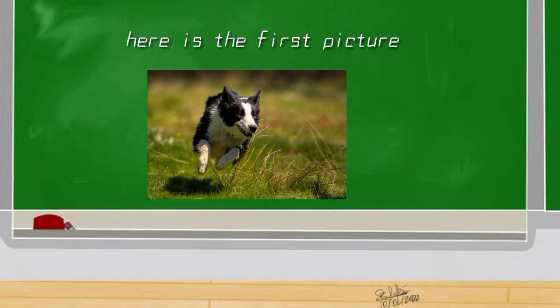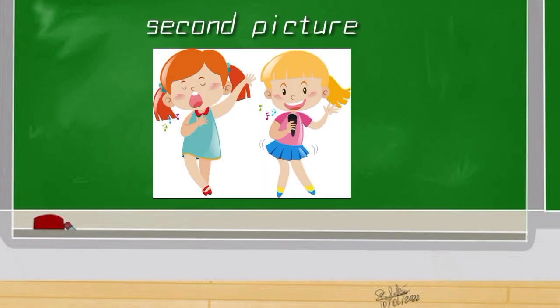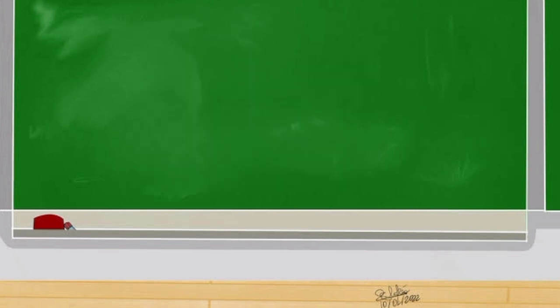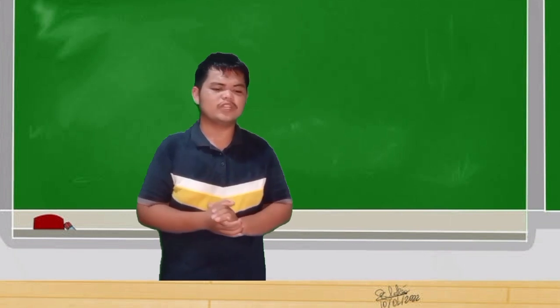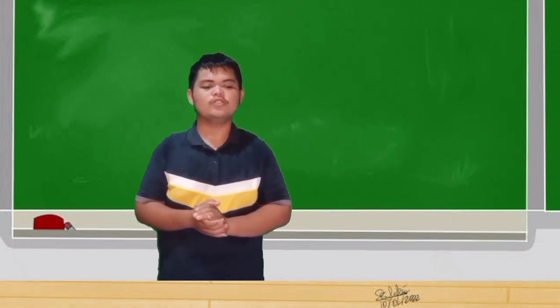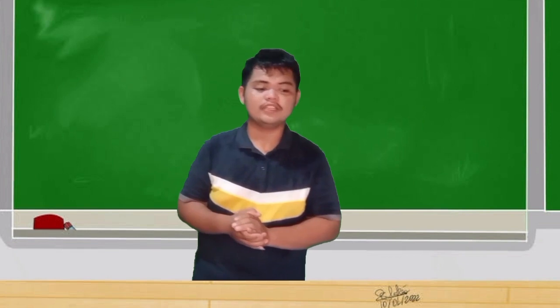Here is the first picture — make sure that your sentence is correct. Our second picture — observe what they are doing in order to create a sentence. And our last picture. What can you say about our activity? Okay, thank you, Jenny — it was fun and exciting indeed.